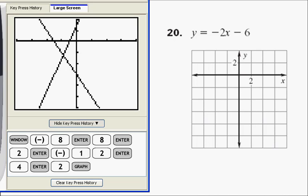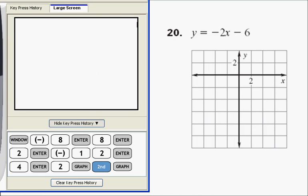And I still have both equations on the graph. Again, to look at the table of values, second, and the graph button. And now I have both equations. The y1 is the 3x plus 3 line, and the y2 is the -2x minus 6.